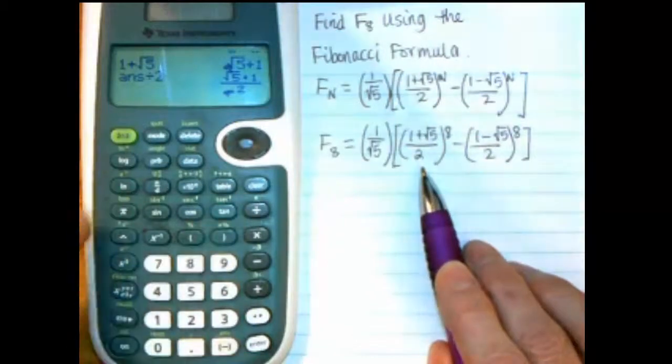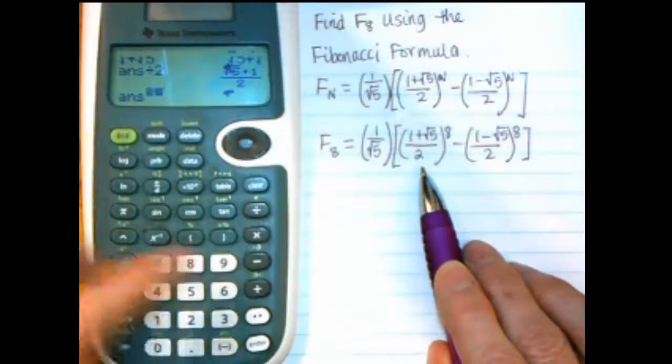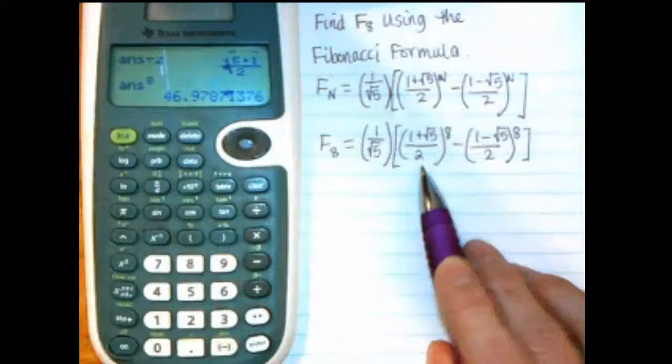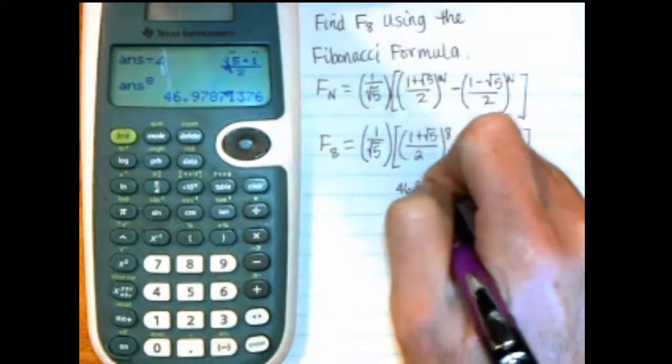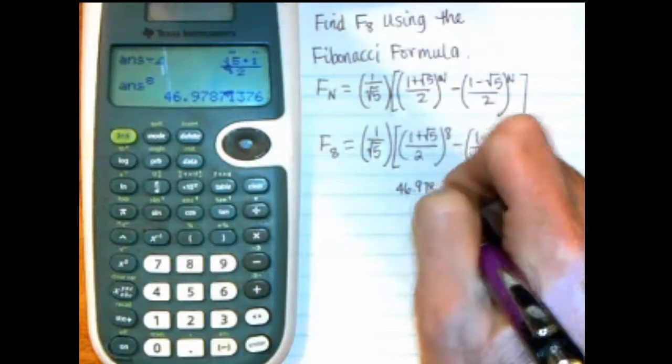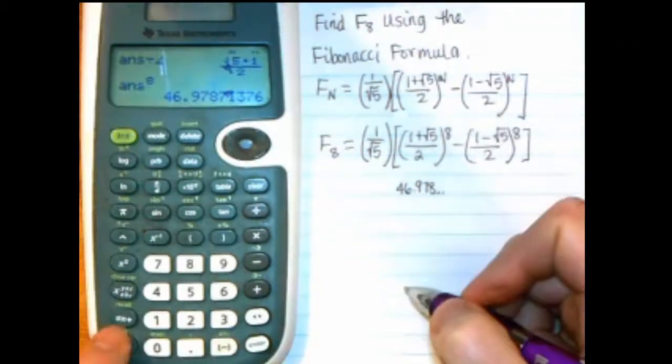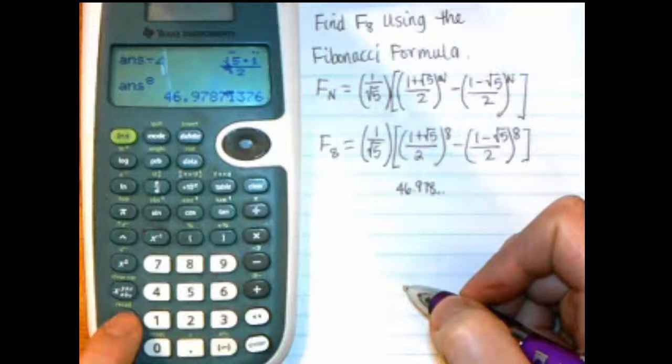And then I'll just divide by 2. And then raise it to the 8th power. And at that point, I get the 46.978, and so on. I want to store that, so I use the STO button with the arrow, store.